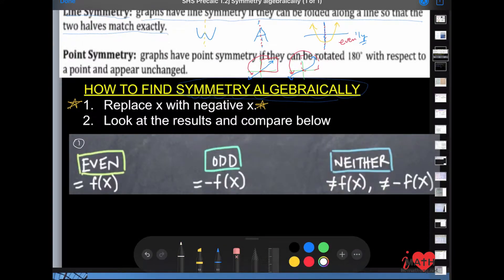If it's equal to the original, it is called even symmetry. If it is equal to the opposite of the original, that's called odd symmetry. And if it is not even and not odd, then it is called neither.